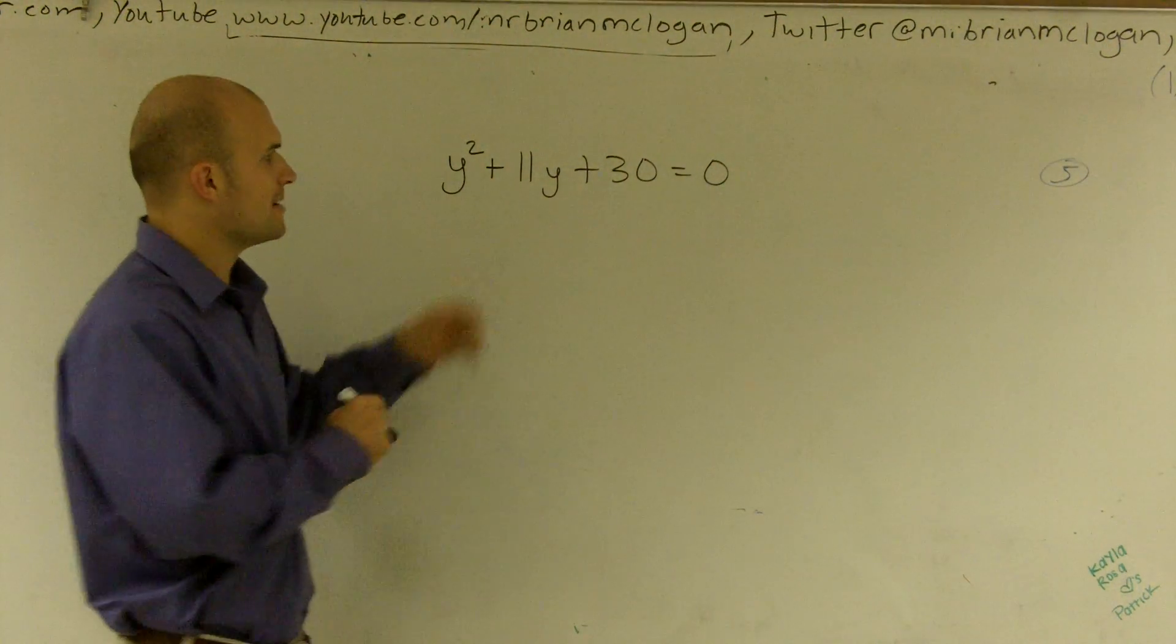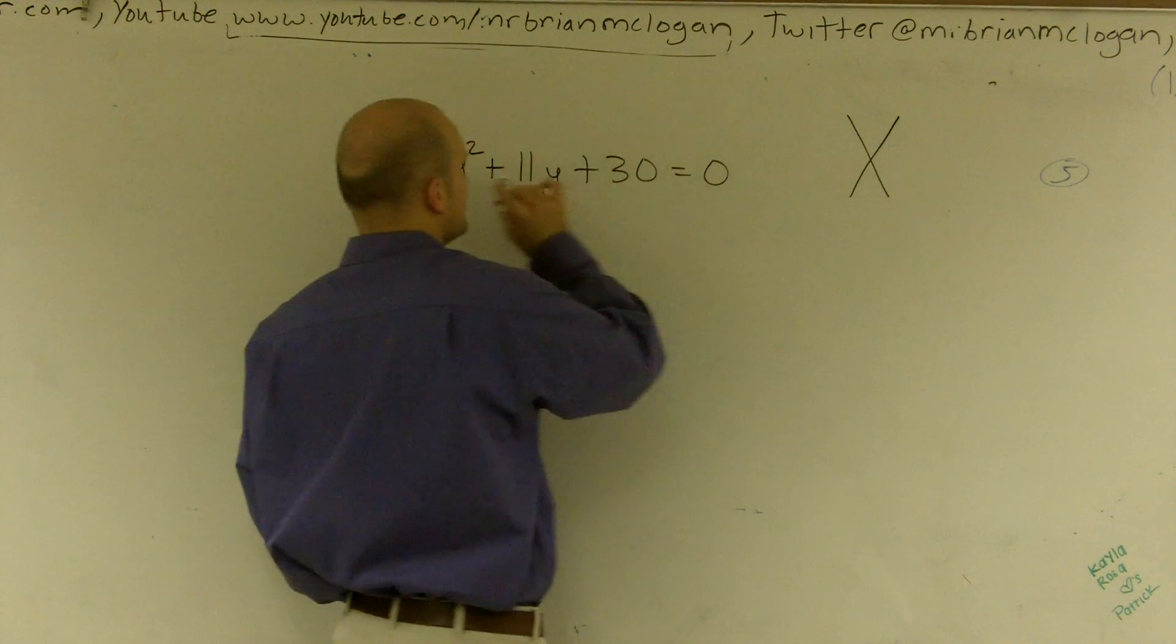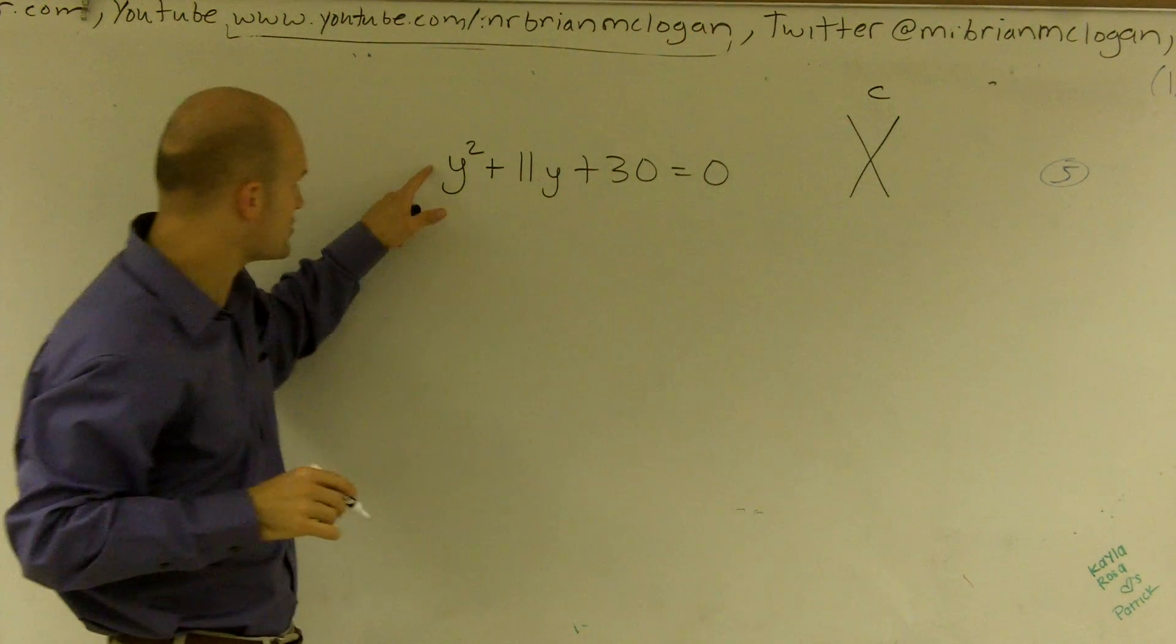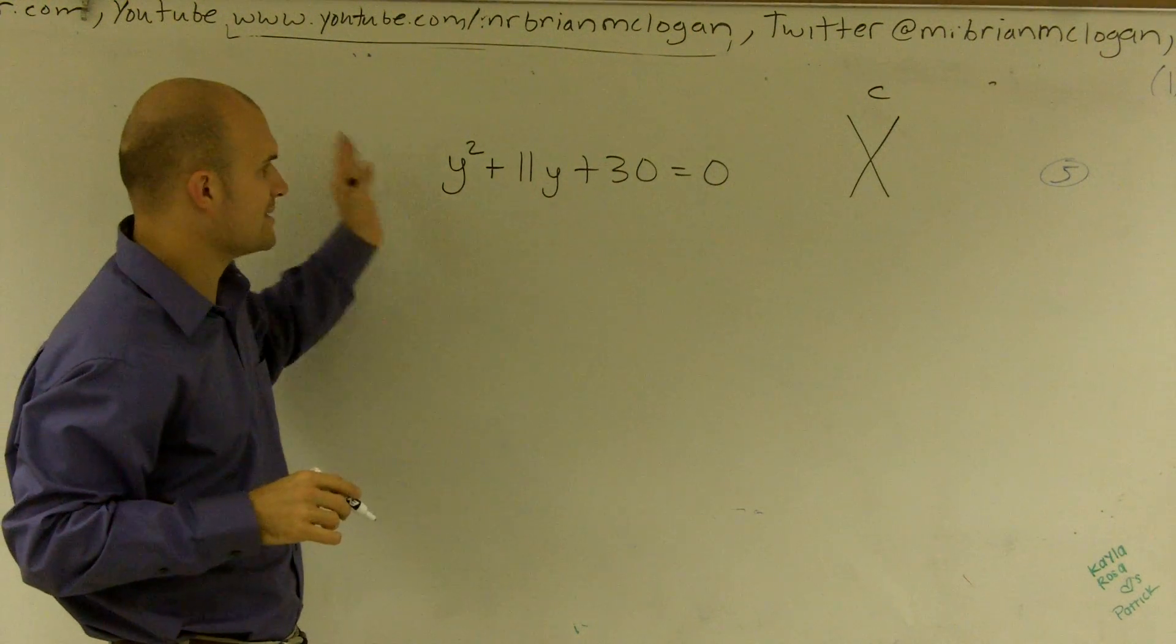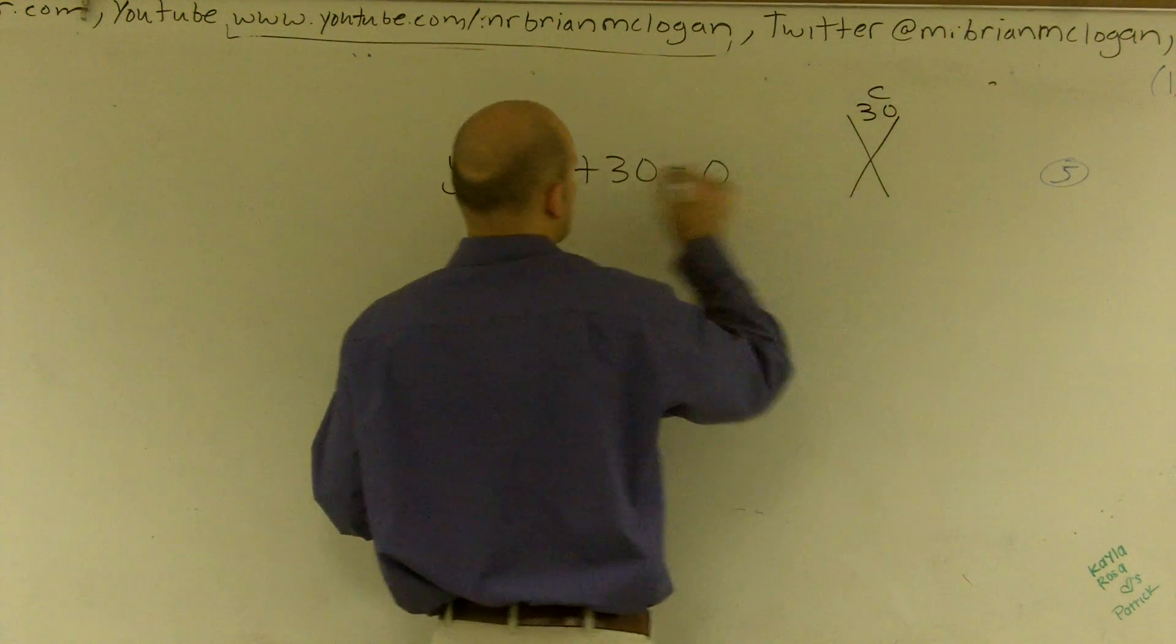But looking at factoring, remember, I can go and see if this works by taking my c up top. Since my leading coefficient up here is a 1, it's just going to be 1 times 30, which is 30. And we're putting over my b, which is 11.